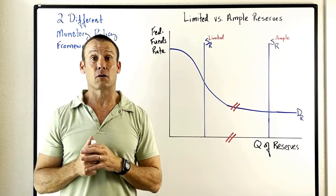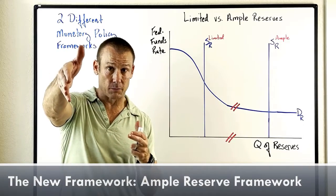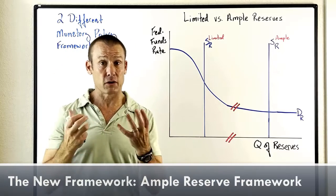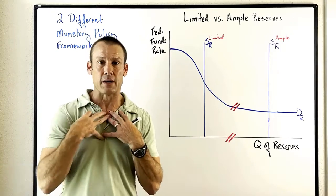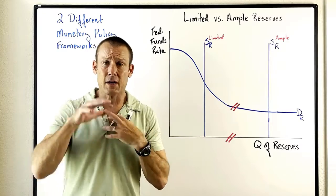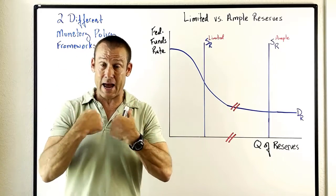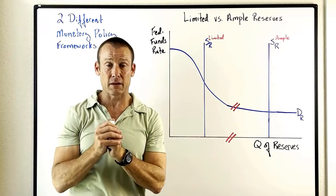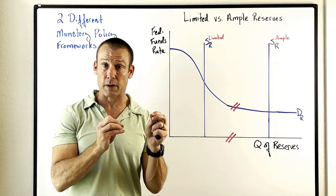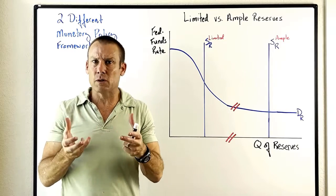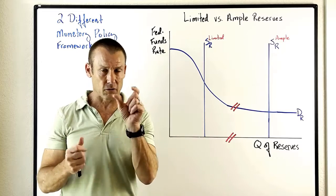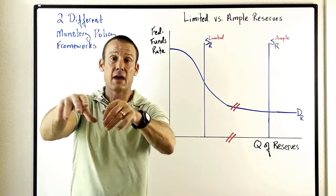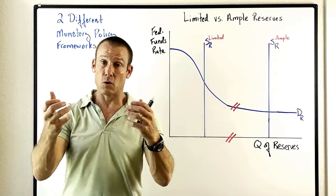Before we get into this, we need to discuss what reserves are. Commercial banks bank at the central bank, which is the Fed in the United States. Commercial banks like Bank of America or Wells Fargo, they bank at the Fed, and their accounts held at the Fed are known as their reserve accounts or reserve balances. Just the same way that I bank at commercial banks and have a deposit there — that deposit is an asset to me and a liability to the commercial bank. Well, commercial banks make deposits at the Fed, and those deposits, known as their reserve balances, are assets to commercial banks and liabilities to the Fed.